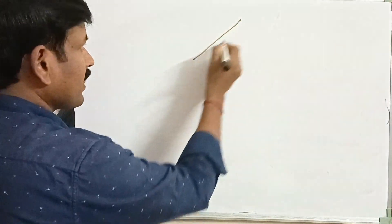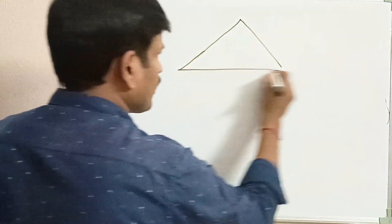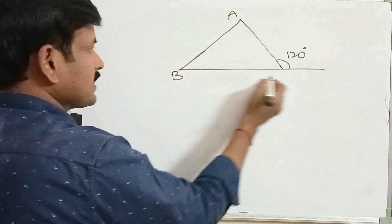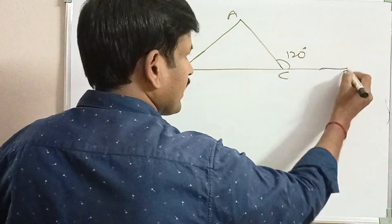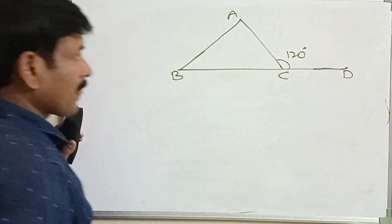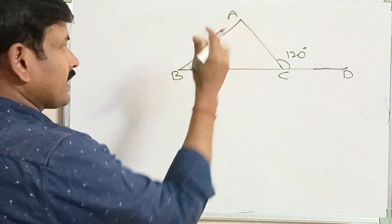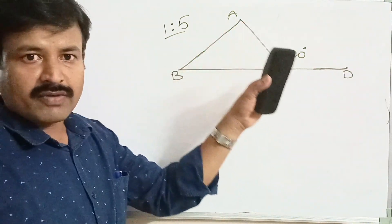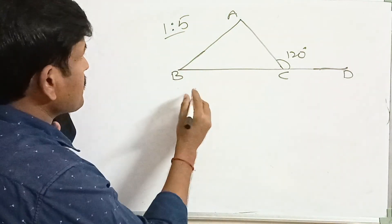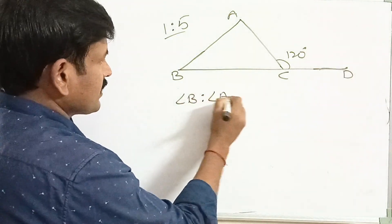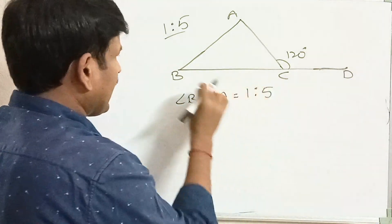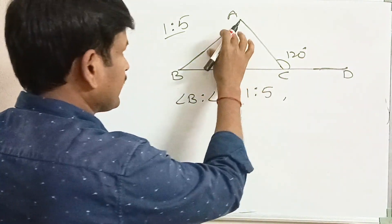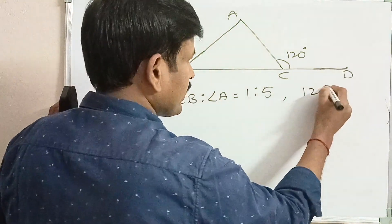Let us discuss another example. One of the exterior angles of a triangle measures 120 degrees. The triangle is named ABC, and angle ACD is the exterior angle. The interior opposite angles are in the ratio 1:5. Find all three angles of the triangle. Here, angle B to angle A is 1:5, as angle B is smaller than angle A. The sum of these two angles, angle A plus angle B, equals 120 degrees.